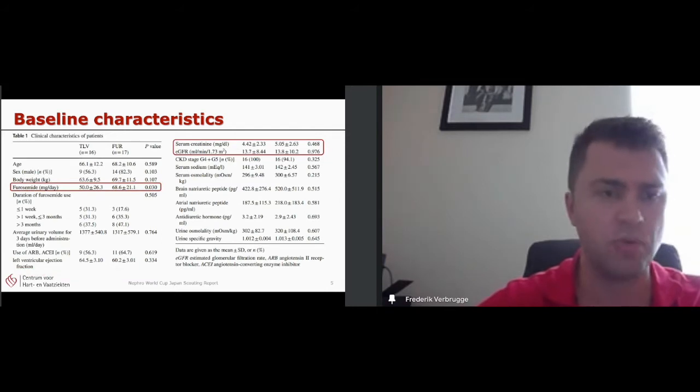Therefore, it was a little bit surprising for me that the furosemide dose was only 50 in the Tolvaptan group and 68 in the furosemide group. This was borderline statistically significant, despite the randomization. But this is a rather low dose for such a poor kidney function, I think, especially with furosemide, which has a variable oral absorption.